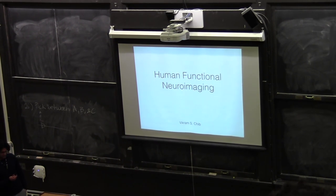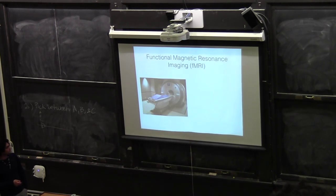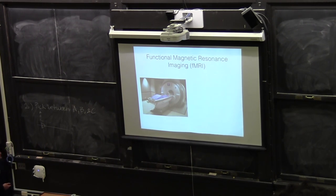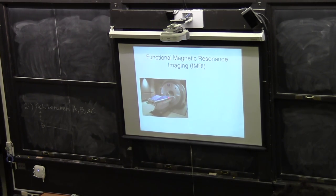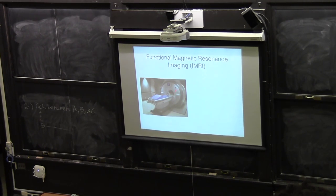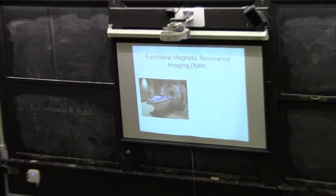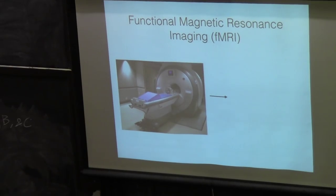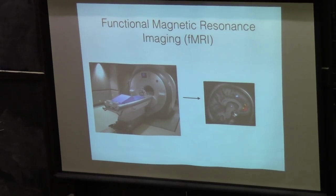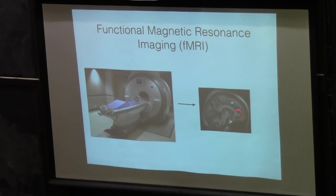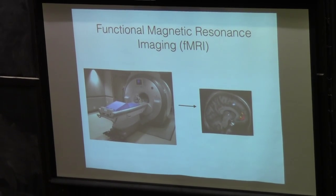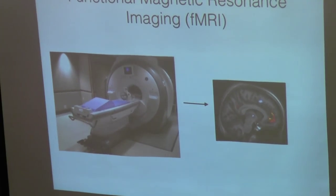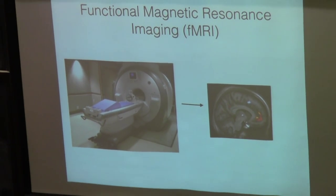This is an MRI scanner — you guys have probably seen one of these before. What we do generally is put somebody on this table, slide them into the scanner. This is a really large magnet. We image their brain and we get some pictures that look like blobs on the brain — you've probably seen these in the news showing what parts of the brain light up when you do different things.